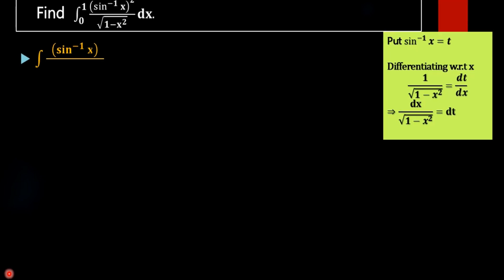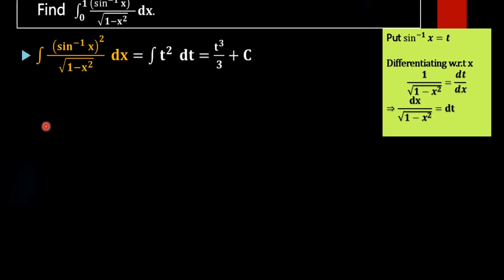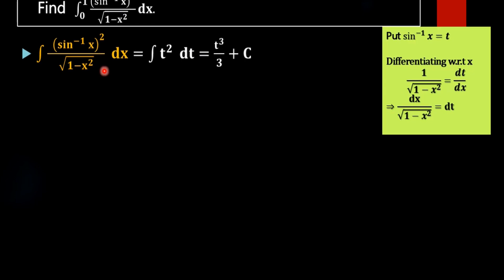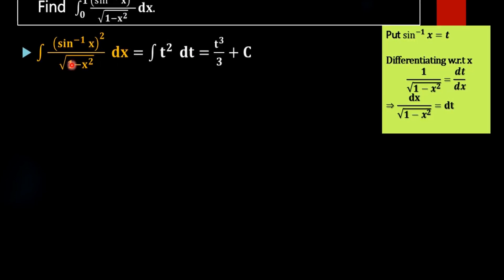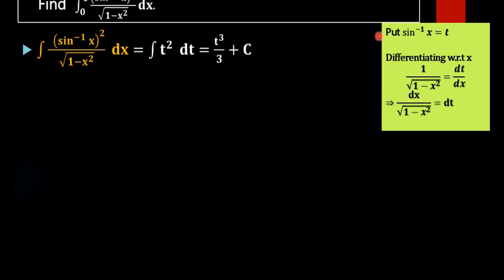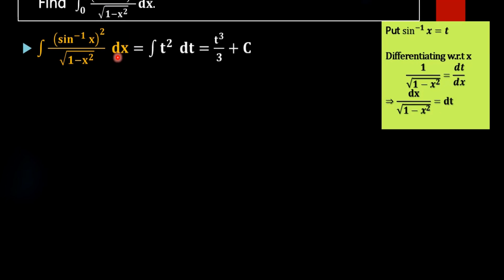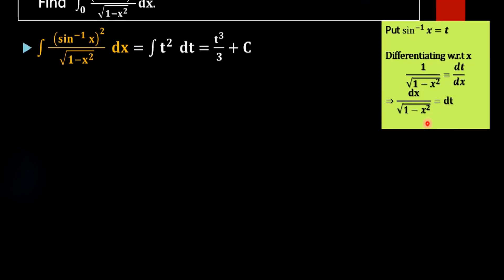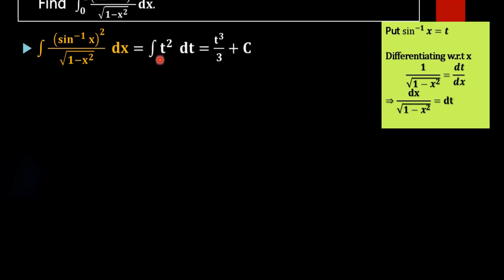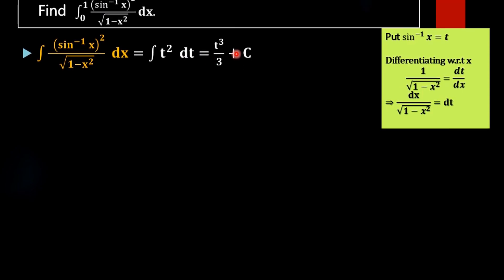After substituting — taking sin inverse x as t — and 1 by root of 1 minus x squared dx equal to dt, we get our integral as the integral of t squared into dt, which is equal to t cubed divided by 3 plus c.